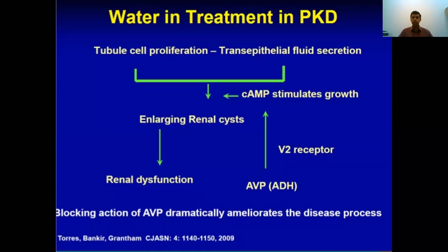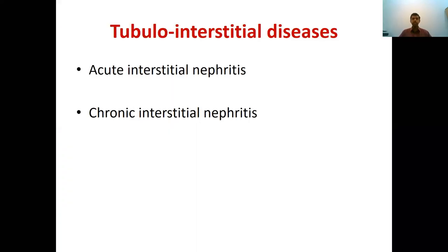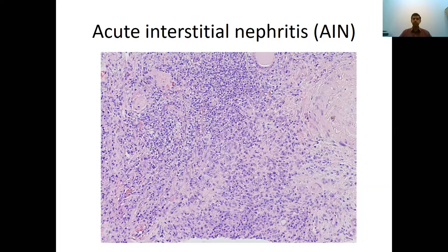The next group is tubular interstitial diseases, where the tubule and interstitial component — the interstitium — get affected by different causes. These are mainly divided into acute interstitial nephritis and chronic interstitial nephritis. In acute interstitial nephritis, looking at a renal biopsy, you can see inflammatory cells in the interstitium with very few visible glomeruli or tubules — that is when you call it acute interstitial nephritis.